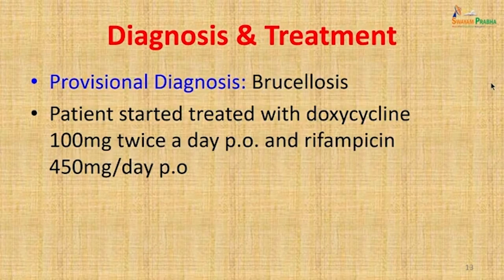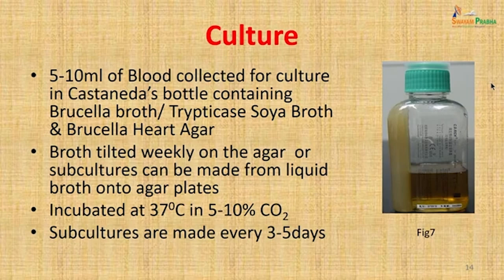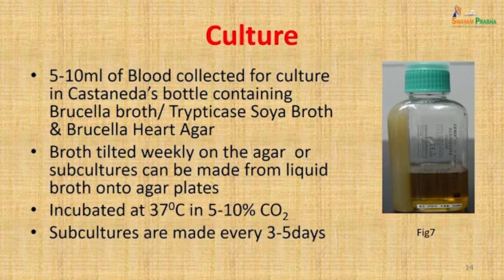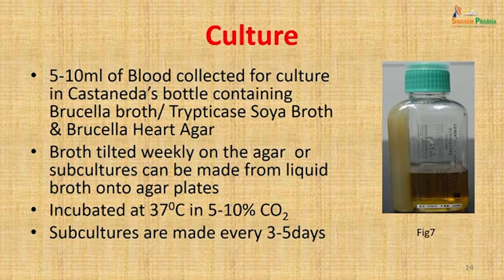A provisional diagnosis of brucellosis was made. The patient was started on doxycycline 100 mg twice a day orally and rifampicin 450 mg per day orally. In the meantime, culture was attempted — 5 to 10 ml of blood was collected and inoculated into a Castaneda's bottle containing Brucella broth, trypticase soya broth, and Brucella heart agar. The broth was tilted weekly on the agar so subcultures could be made from liquid onto agar without causing contamination.